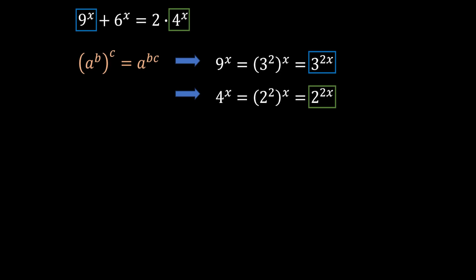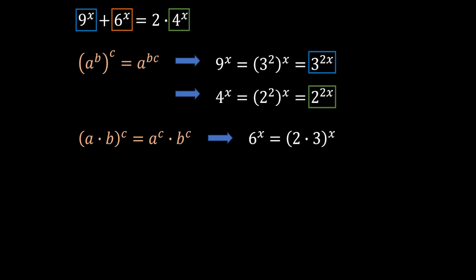Now if we take a look at our second term, 6 to the power of x, we can use another exponential rule called power of product. It states that a times b to the power of c is equal to a to the power of c times b to the power of c. We can apply this to 6 to the power of x by simplifying 6 as 2 times 3, giving us 2 to the power of x times 3 to the power of x.